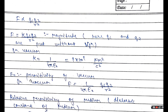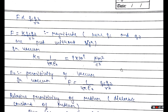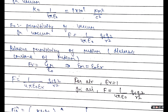Here epsilon naught is permittivity of vacuum. We can define Coulomb's Law in any medium using epsilon_m, where epsilon_m is equal to epsilon naught into epsilon_r (relative permittivity). The general expression for force is: Force = 1 by 4 pi epsilon naught into epsilon_r, multiplied by Q1 Q2 upon R square. In vacuum, epsilon_r equals 1, so we use Force = 1 by 4 pi epsilon naught into Q1 Q2 upon R square.